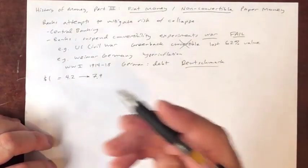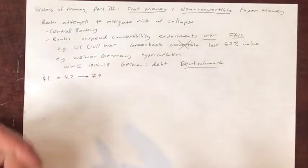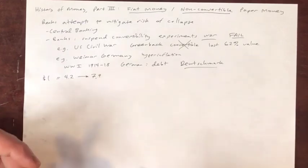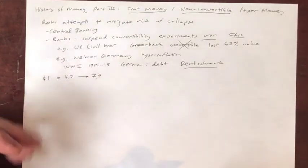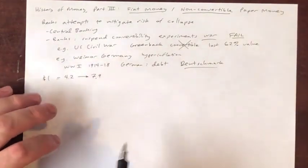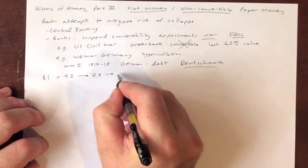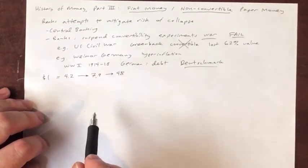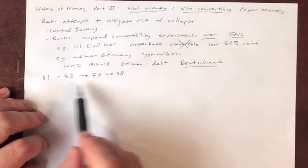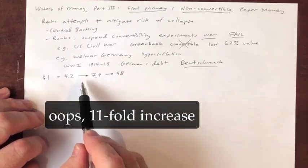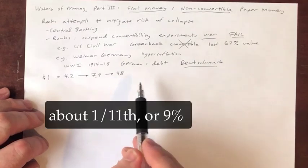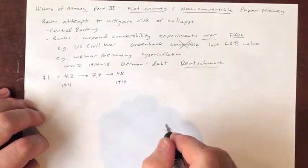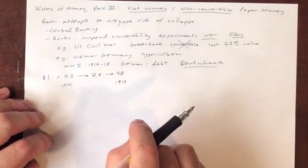When Germany loses the war, things get worse. When they still had a possibility of winning, the Germans could say they'd get new territory and greater economic power. When they lose, that gets reevaluated. By 1919, we get to a situation where one dollar now buys 48 marks — an eightfold increase, meaning it's now less than one-eighth its previous value from only five years before.